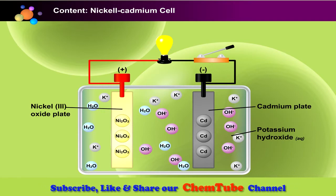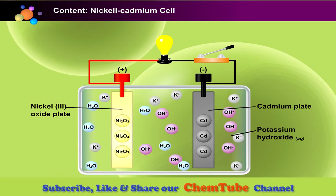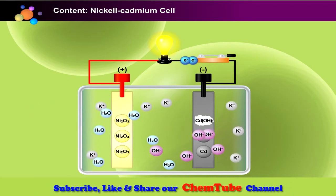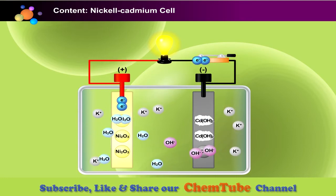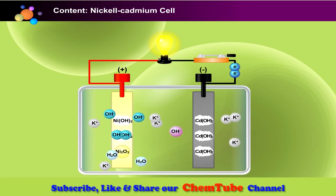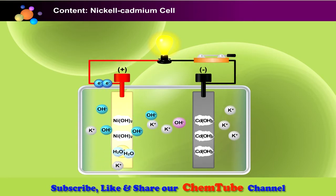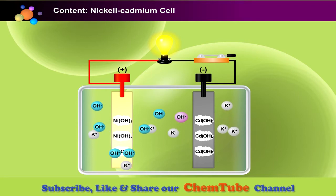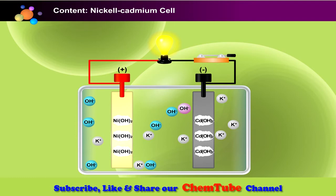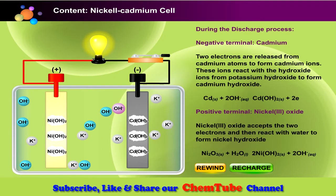Click the start button to see the reaction in this cell when it is being used to produce electric current. Observe the reactions at the terminals. Is there any change in the electrolyte concentration? When the cell is being recharged, the reactions at the terminals are reversed.